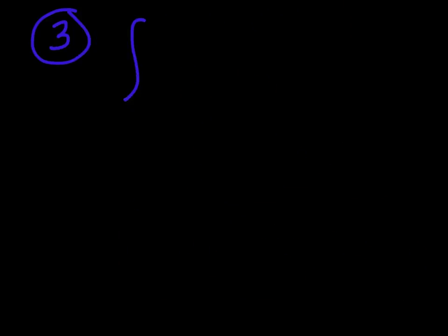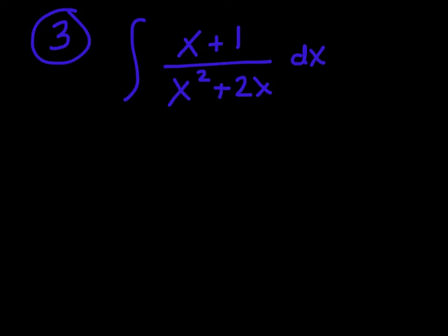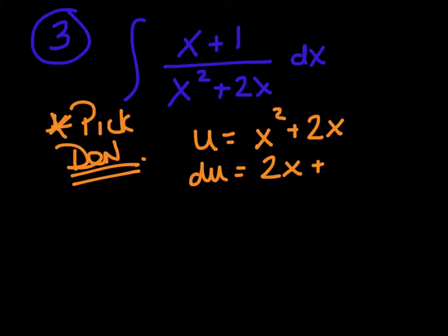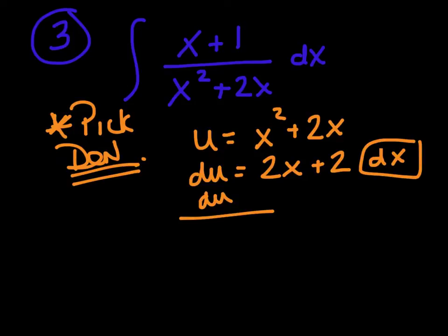Example 3: the integral of (x + 1) divided by (x squared + 2x) dx. I don't know whose derivative this is, so I need u-substitution. We said if you have a fraction, pick the denominator. So u equals x squared plus 2x, therefore du equals (2x + 2) dx, which gives dx equals du over (2x + 2).